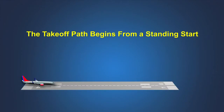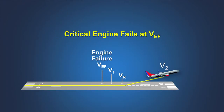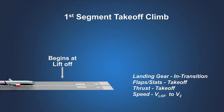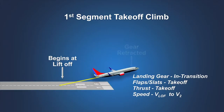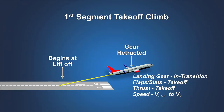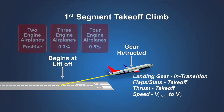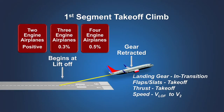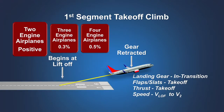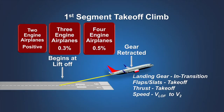The takeoff path begins from a standing start. The critical engine is failed at VEF and remains inoperative for the rest of the takeoff. The first segment begins at liftoff and continues until the landing gear is fully retracted. The airplane is accelerated in the air to V2 speed. During this segment, a turbine-powered airplane with two engines must be capable of achieving a positive climb gradient in still air with one engine inoperative and without the benefit of ground effect.